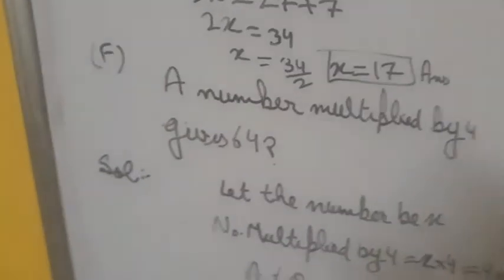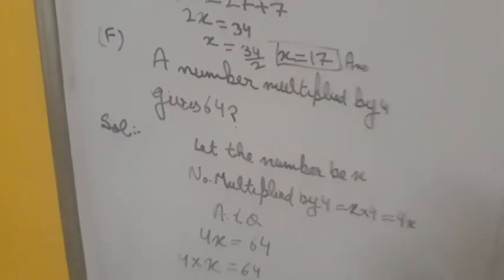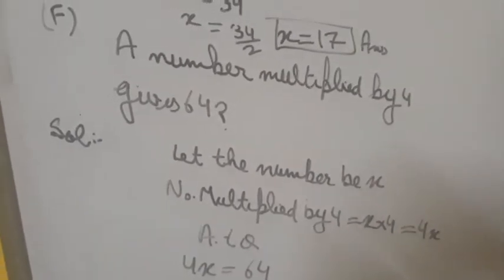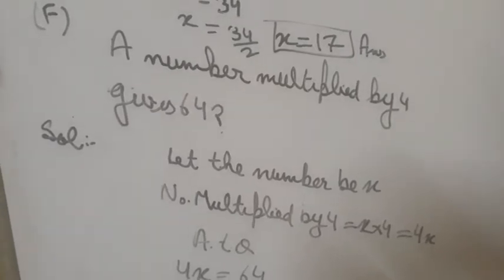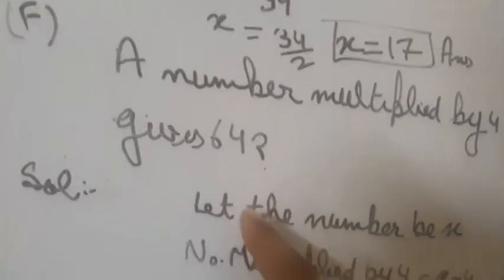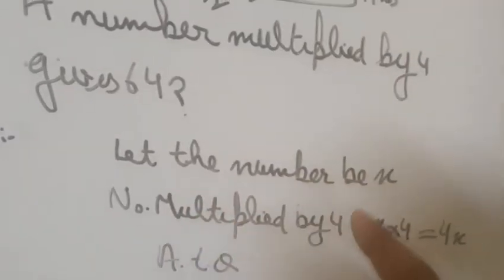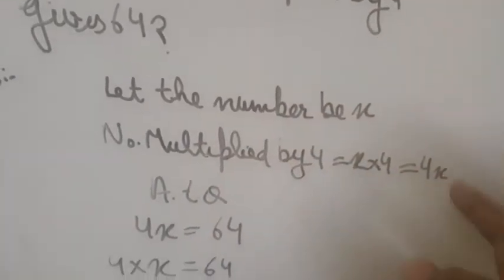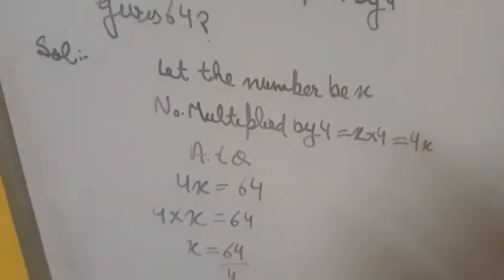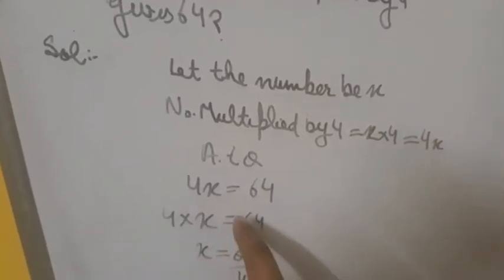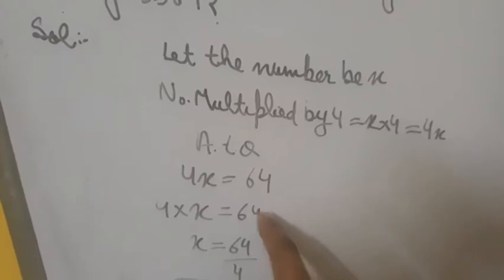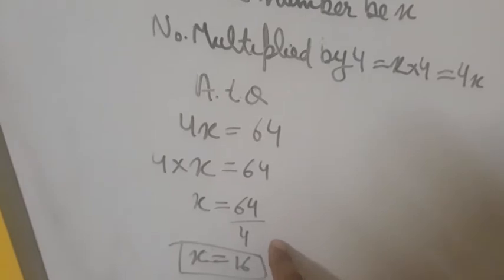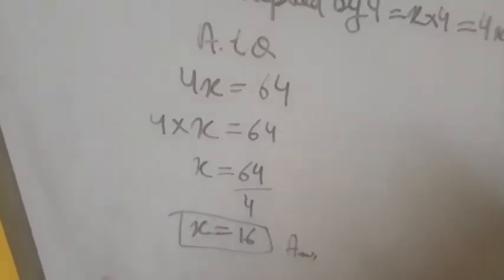Now part F (or G): 'a number multiplied by 4 gives 64'. Let the number be x. Number multiplied by 4 means 4x. According to the question, 4x = 64. Dividing both sides by 4, x = 16.